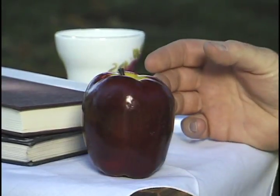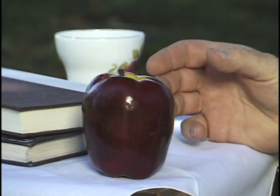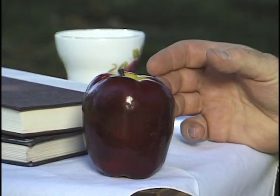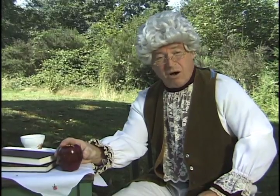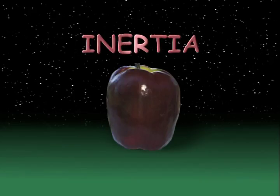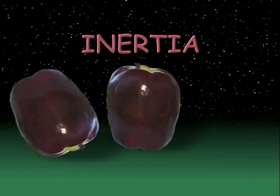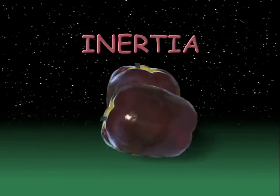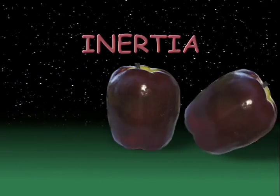When an object like this apple isn't moving, we say it is at rest. It will stay at rest until a force makes it move. This property in objects is called inertia. Inertia means an object at rest tends to stay at rest, and an object that is moving tends to keep moving.